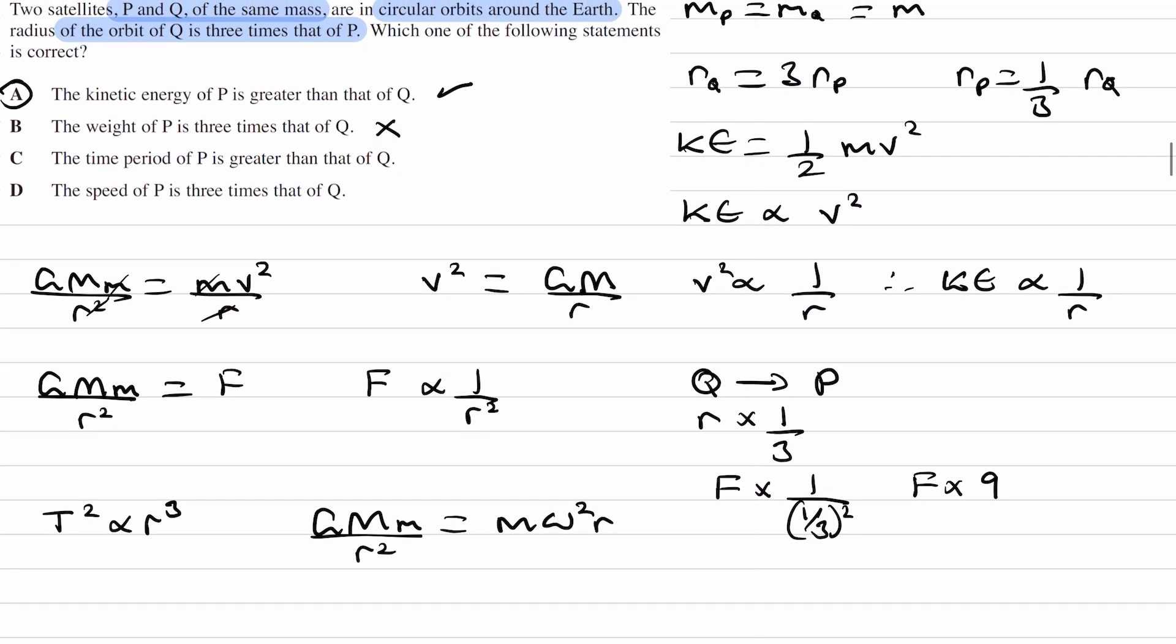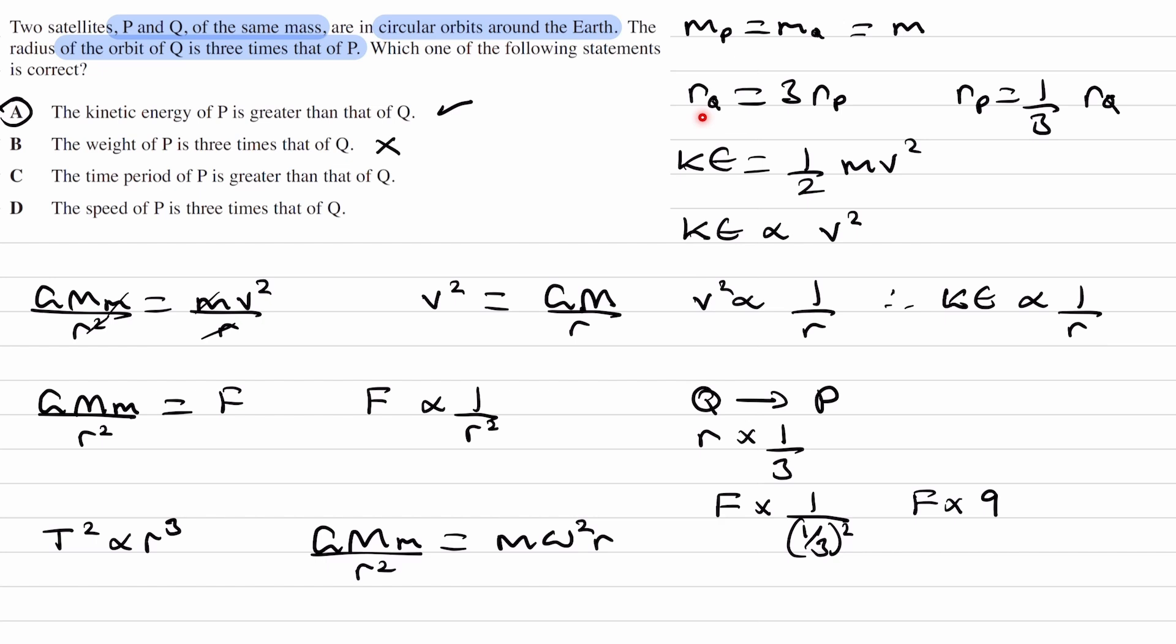The time period of P is greater than that of Q. So from this proportionality that we have here, the bigger the orbital radius, the bigger the time period. Q has a greater radius. Q's radius of orbit is three times bigger than that of P's, and therefore Q will have a bigger time period. C says that P has a greater time period, so therefore that's why C is wrong.